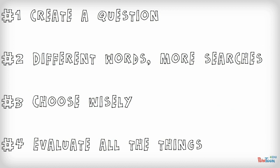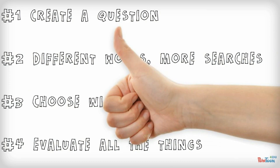So to recap, the four tips for doing research assignments successfully are create a question, come up with different words for more searches, choose your sources carefully, and evaluate everything.